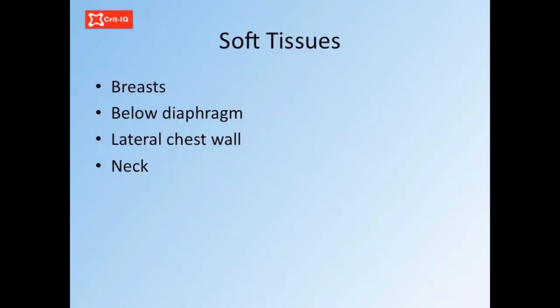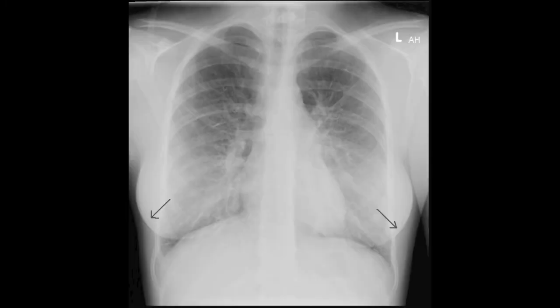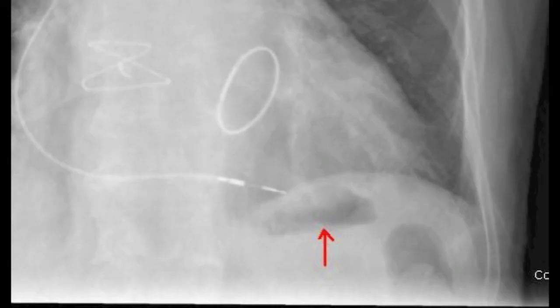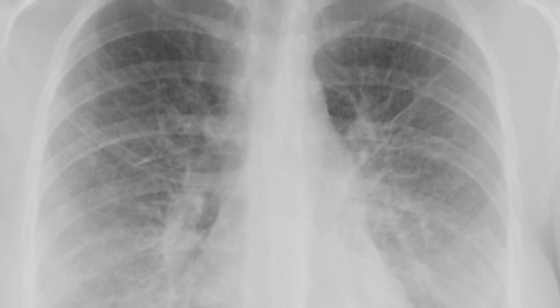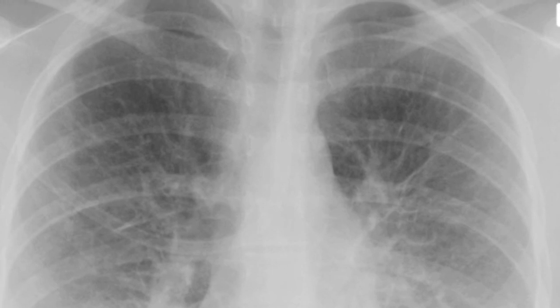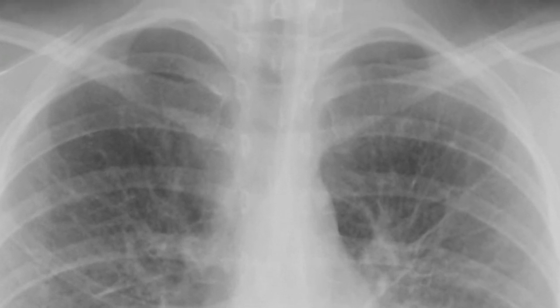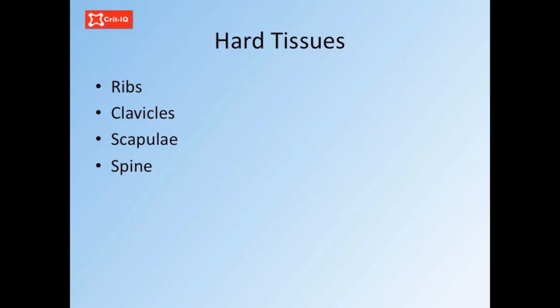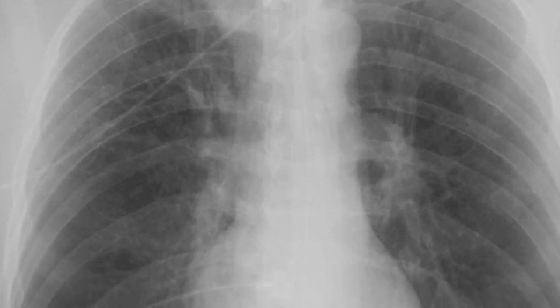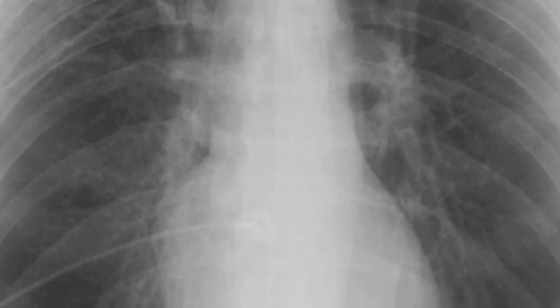Carefully examine the soft tissues. Look for breasts and note if there has been a mastectomy. Nipple shadows can sometimes cause confusion. Look below the diaphragm for the stomach bubble and any signs of abdominal organ enlargement. Check the soft tissues around the chest for abnormalities including air. Look in the neck for soft tissue masses, goiter, and subcutaneous emphysema. Examine all the bones for presence of abnormalities, including the spine.